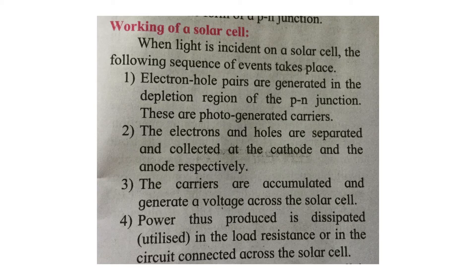This displacement of charges sets up a potential voltage across the two regions, with the p-side as the positive electrode and the n-side as the negative electrode. If an external load RL is connected, current flows through it and we get electrical energy.